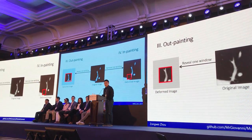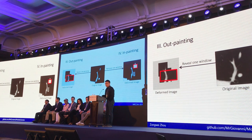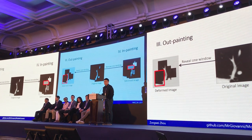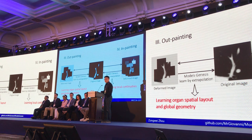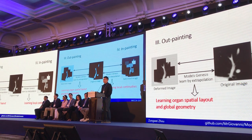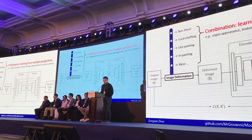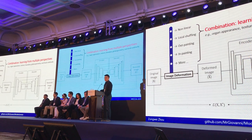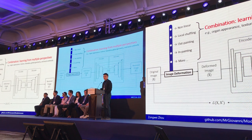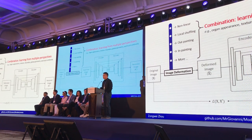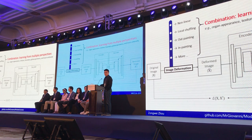We also have image outpainting and inpainting, where small regions are hidden from the model by random numbers. In outpainting, to restore the original image, the model must learn from the organ spatial layout and global geometry by extrapolation. In inpainting, the model must learn from the local continuities of organs by interpolation. We combine these four approaches together to allow the model to learn from multiple perspectives. Our ablation study shows that the combined approach is more robust compared with each individual. Also, our self-supervised learning framework is scalable because it is easy to incorporate any other meaningful image deformations.